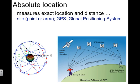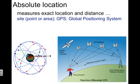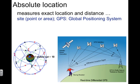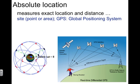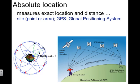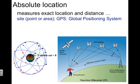This animated image shows the GPS constellation in motion with the rotating Earth. On average, at least nine satellites are visible by line of sight at any given point. You can see the Earth rotating and the satellites in orbit.